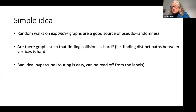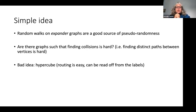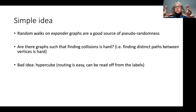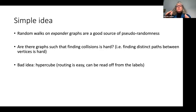Expander graphs are a really good source of pseudo-randomness because short walks on expander graphs very quickly get you to a roughly uniformly distributed output. That was the reason we proposed using expander graphs — the output of our hash function, as long as we take a walk of roughly log of the number of vertices, will end up at an essentially uniformly distributed point. But in addition, for collision resistance and pre-image resistance, we need a graph where finding paths is hard.